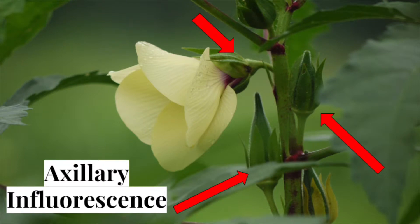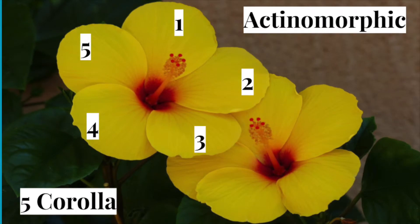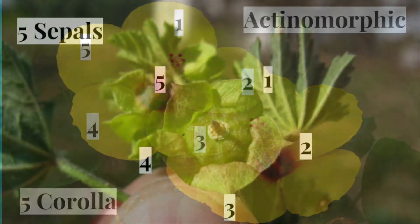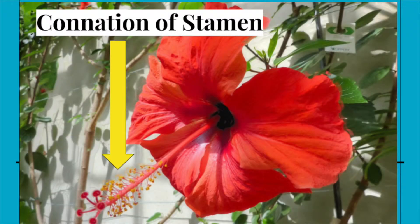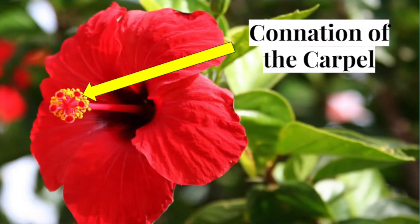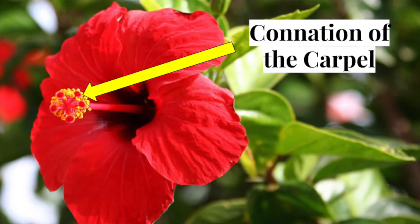The Malvaceae flowers are borne in definite or indefinite axillary inflorescences, meaning they are arranged in clusters about a stem. The flowers are generally actinomorphic, meaning they have radial symmetry. Malvaceae typically can be found having five calyx, or sepals, and five corolla, or petals. There is connation of the stamen at least at their bases, and often this connation forms a tube around the pistil. There is also connation within the carpels.